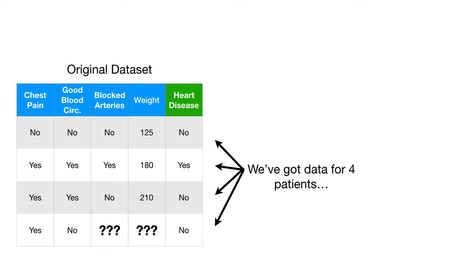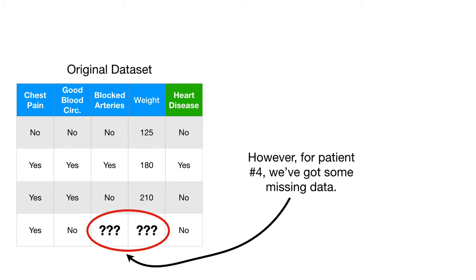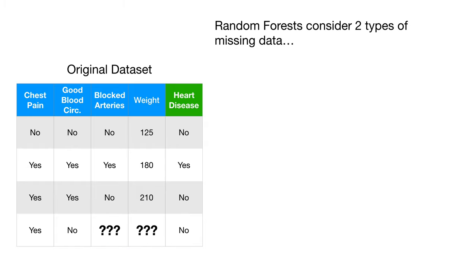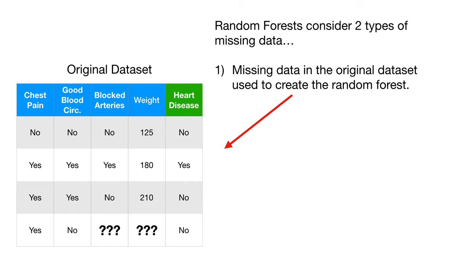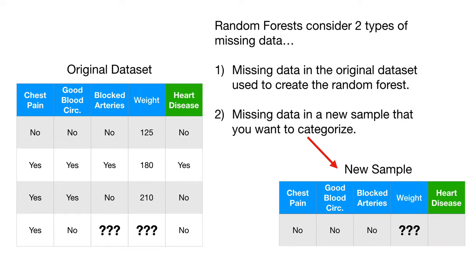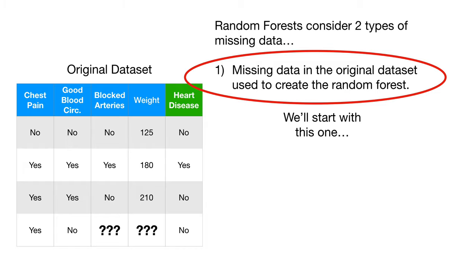Here's our data set. We've got data for four separate patients. However, for patient number four, we've got some missing data. Random Forests consider two types of missing data. One, missing data in the original data set used to create the random forest. And two, missing data in a new sample that we want to categorize. We'll start with this one.